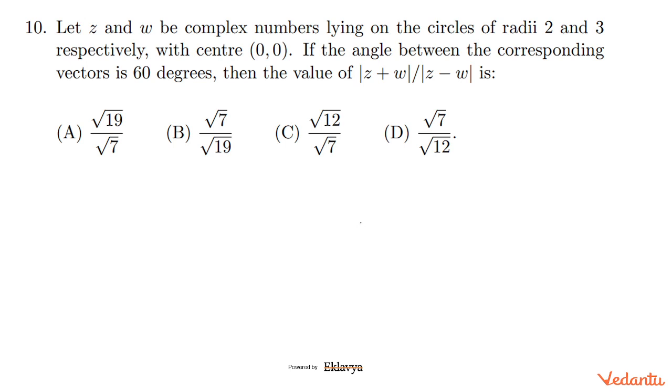respectively, with center at (0,0) at the origin. So we will make two circles with center at the origin, and z is somewhere. The angle between the corresponding points is